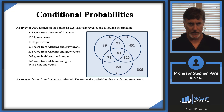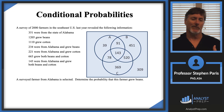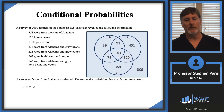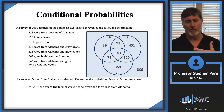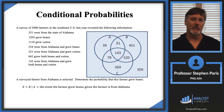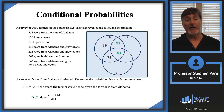Now let's go back and talk about the notation. Our event E is going to be B given A — that vertical bar is read 'given.' So this is the event that the farmer grew beans given that the farmer is from Alabama. Given A means you're no longer talking about all of the farmers in the survey; you're only talking about those outcomes of event A. Then I'm looking for how many of those outcomes in A are also in B — that's the 234.